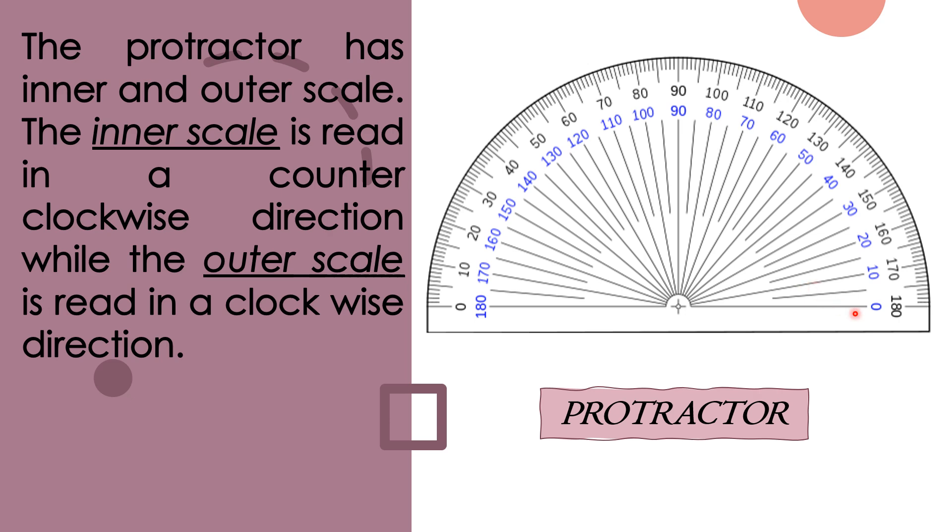So here from zero at the right going to the number 180 to the left, that is the inner scale and we have to measure or draw an angle here in counterclockwise. While from left side zero to the right side 180, that is the outer scale. So we will measure or draw an angle in clockwise direction.